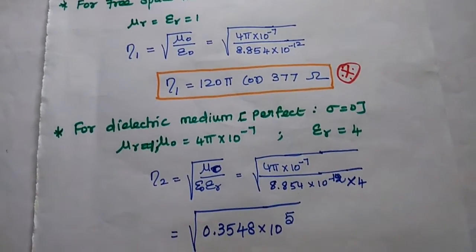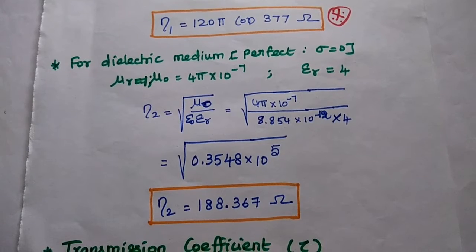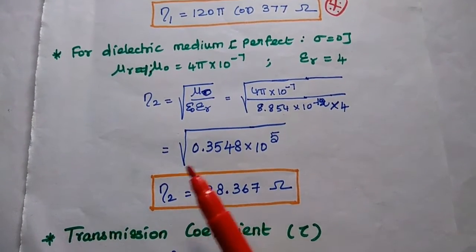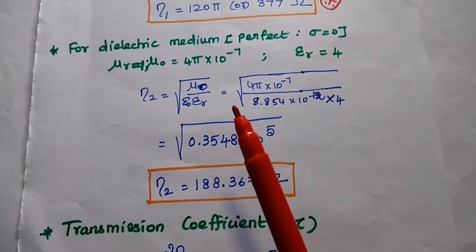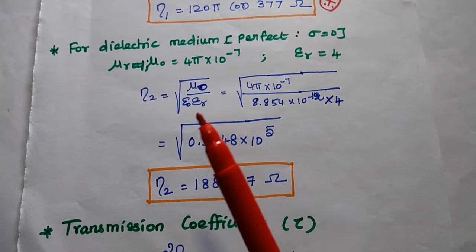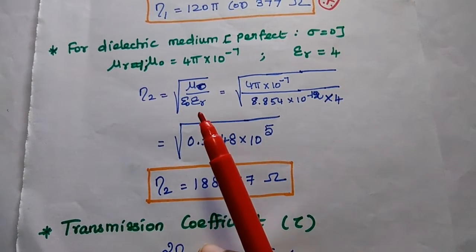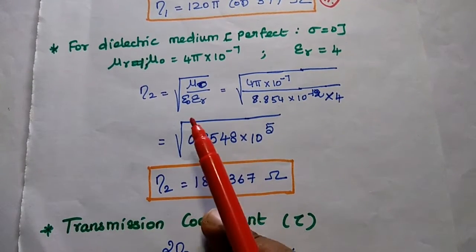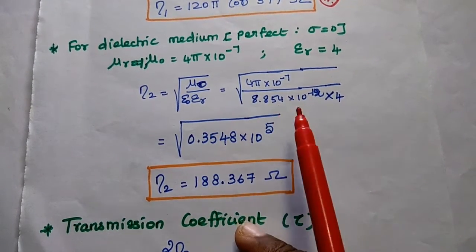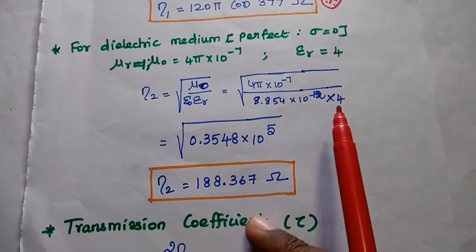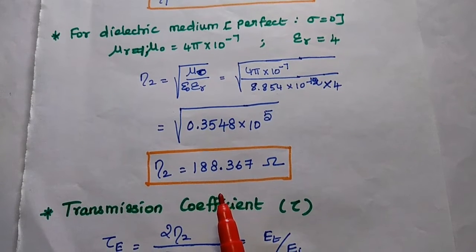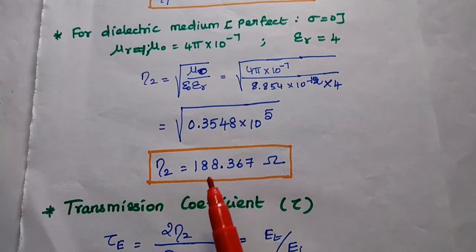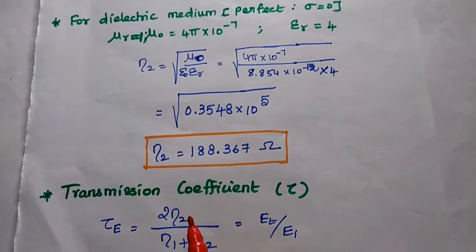Next we find the intrinsic impedance for the second medium, the dielectric medium. For a perfect dielectric with mu r equal to 1, we write eta 2 as square root of mu naught divided by epsilon naught times epsilon r. So we compute square root of 4π × 10⁻⁷ divided by 8.854 × 10⁻¹² times 4. Simplifying with a calculator, we get eta 2 equal to 188.367 ohm.